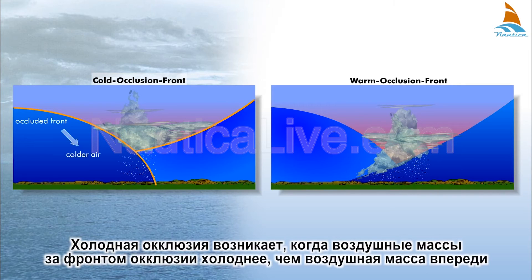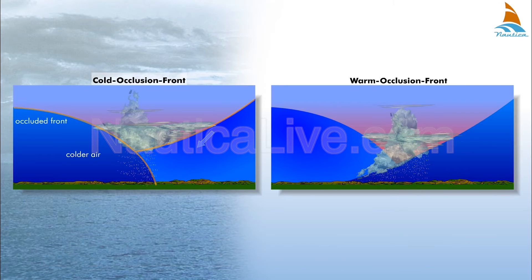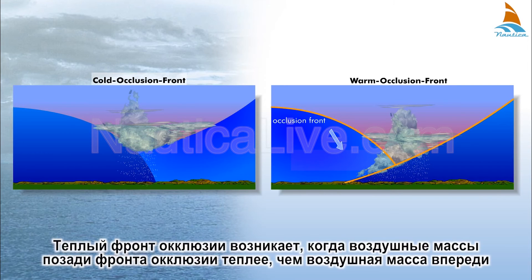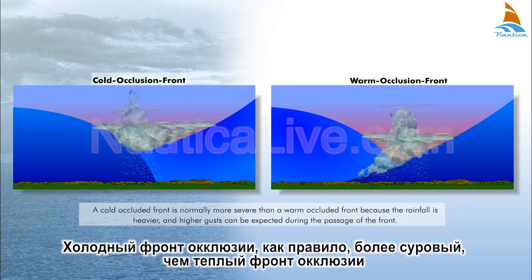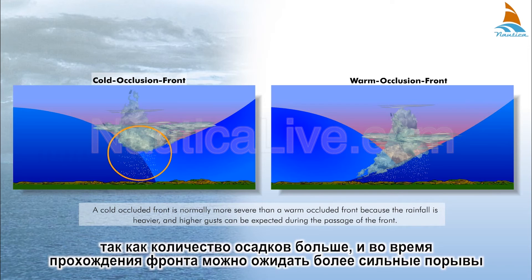A cold occlusion occurs when the air mass behind the occluded front is colder than the air mass ahead of it. A cold occluded front is normally more severe than a warm occluded front because the rainfall is heavier and higher gusts can be expected during the passage of the front.